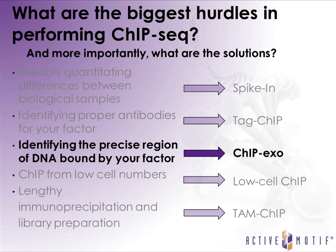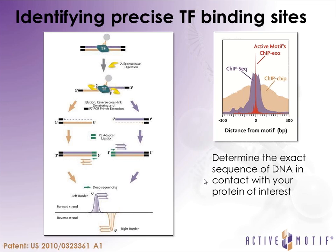The next aspect is identifying the precise region of DNA bound by your factor. For this, we've worked with Frank Pugh to develop ChIP-exo as a kit at Active Motif. You perform your chromatin immunoprecipitation for your transcription factor of interest, then treat with an exonuclease that digests the DNA down to the site where the transcription factor binds. You then reverse cross-link, elute, extend with a P7 primer to finish your library, and when you sequence you get two peaks that overlap only at the region where the transcription factor was bound.